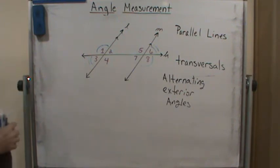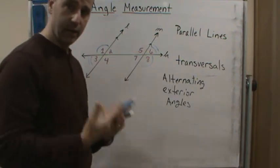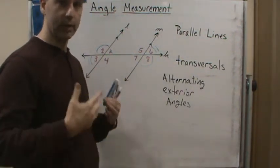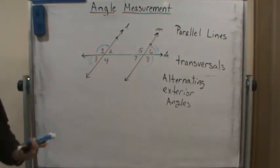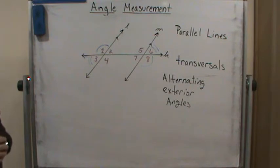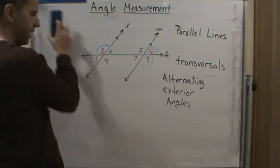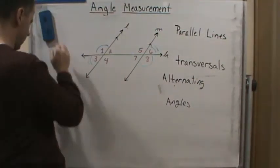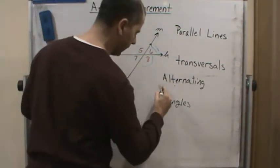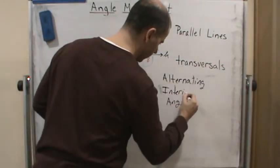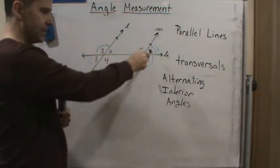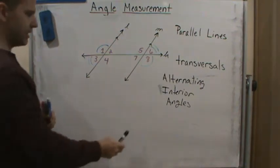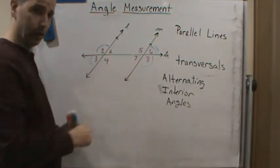Alternating exterior angles are congruent — in other words, they have the same measure. That's one outcome that comes out of transversals and parallel lines. Another outcome is what we call alternating interior angles. Again, alternating means they're on opposite sides of the transversal, but interior means they're on the inside of the parallel lines.